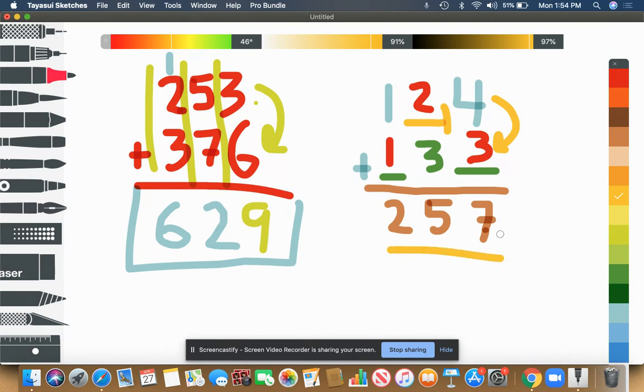So what I like to do is go backwards, and instead of adding them, I just subtract 7 minus 4, put the 3. 5 minus 3, put the 2. 2 minus 1, put 1, and I'm done.